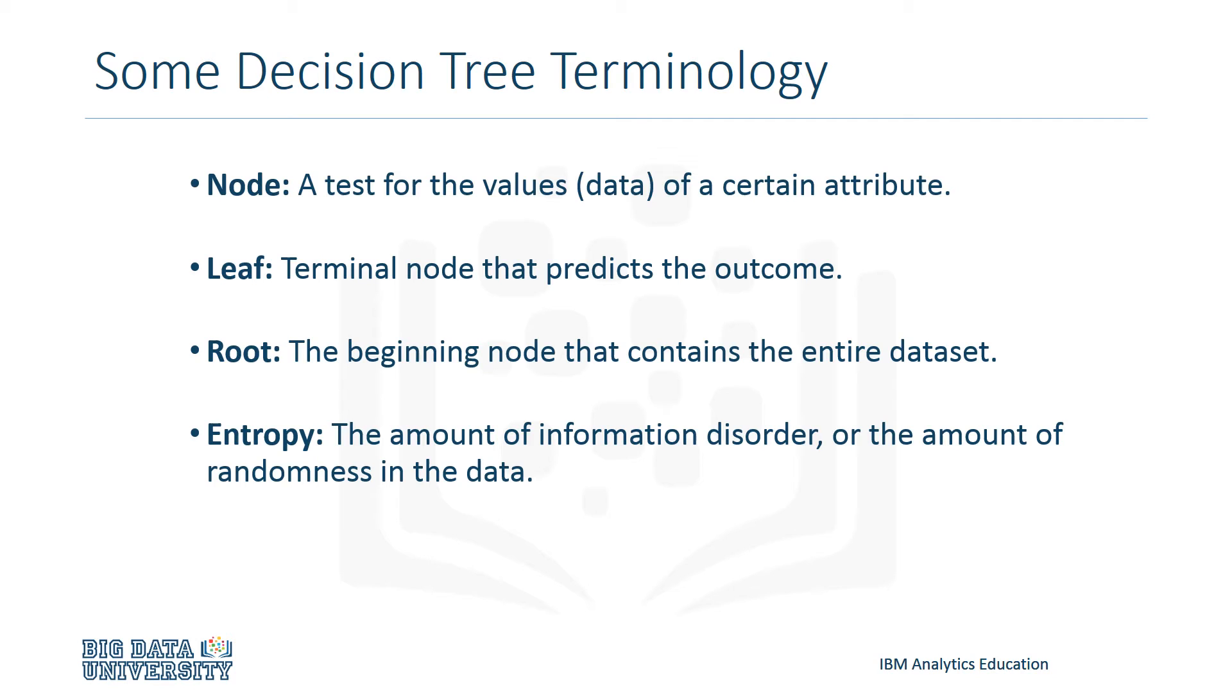Entropy is the amount of information disorder, or the amount of randomness in the data. If we're talking about a decision tree, we can say, for example, that the entropy in the node depends on how much random data is in that node.